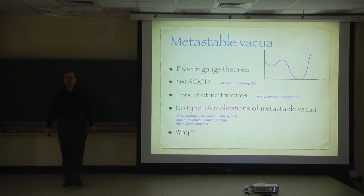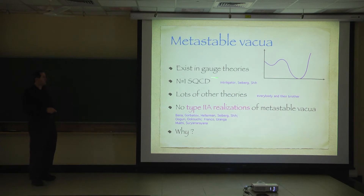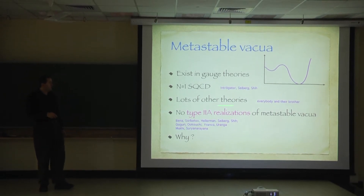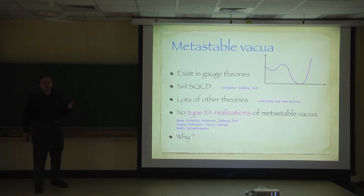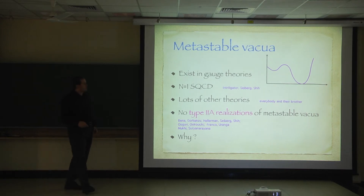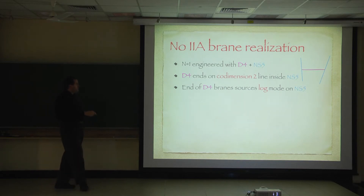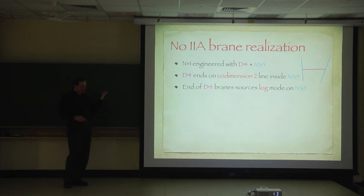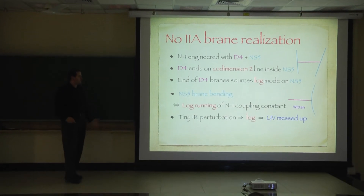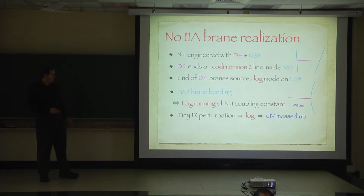I want to begin by reviewing something which is very old. There's older work on metastable vacua. Intriligator, Seiberg, and Shih showed many years ago that N=1 super QCD has metastable vacua, and many other theories do that. However, if you try to realize these metastable vacua in type IIA string theory, you cannot — there's a problem. When you realize N=1 gauge theories, when you engineer them using D-branes, you have some NS5 branes and some D4 branes ending on them. The D4 sources a log mode in the NS5 brane.